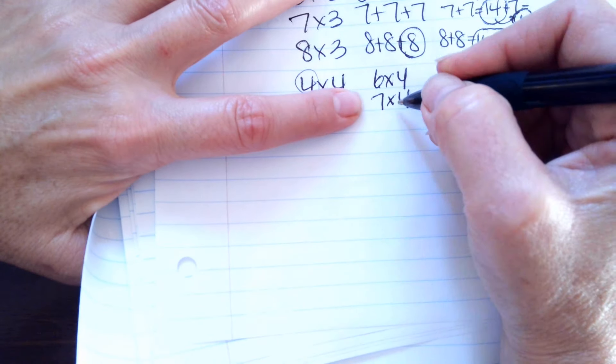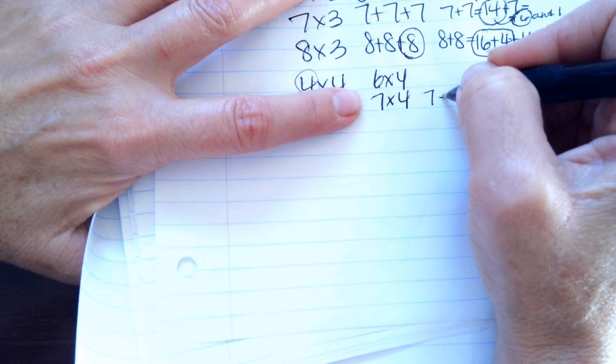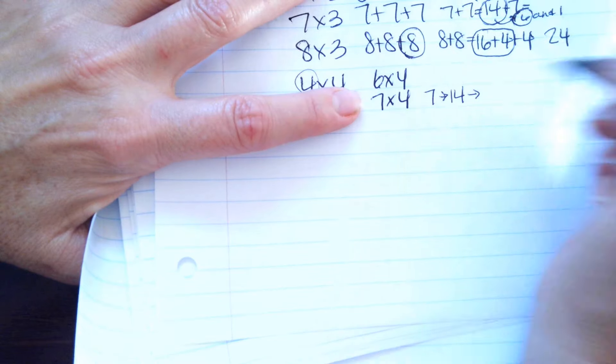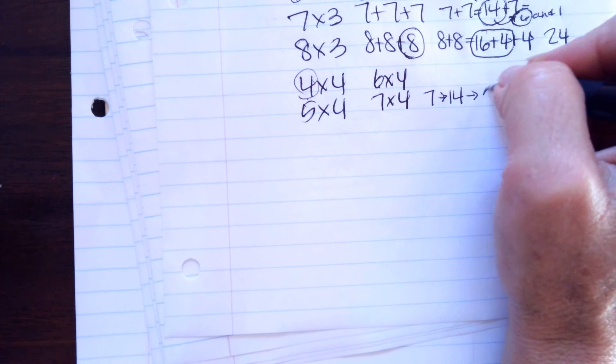7 times 4. We're going to do 7 doubled is 14 and 14 doubled is the same as 14 plus 14. It's 28.